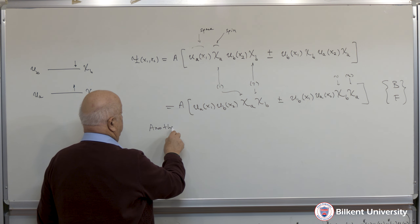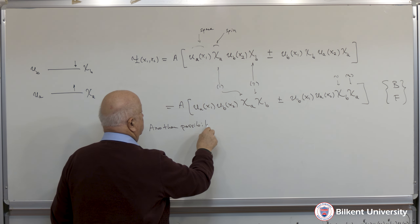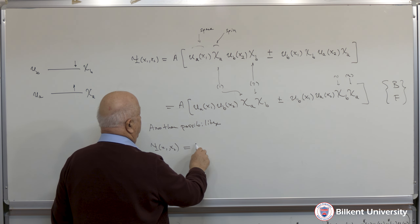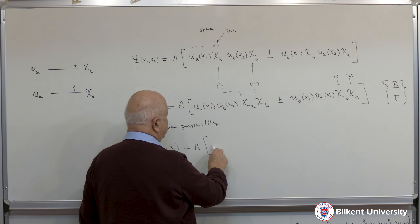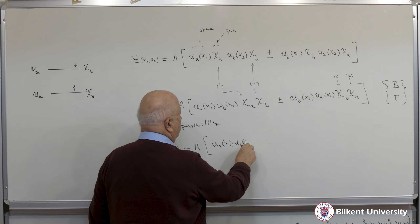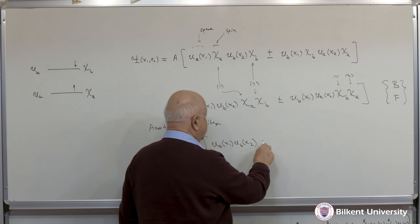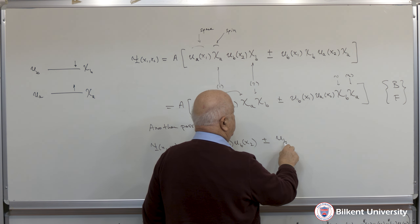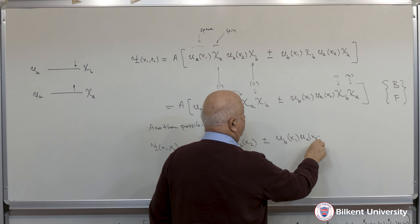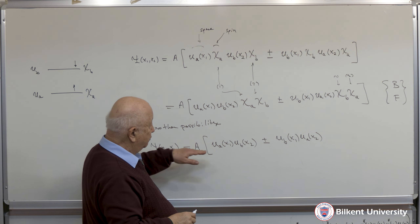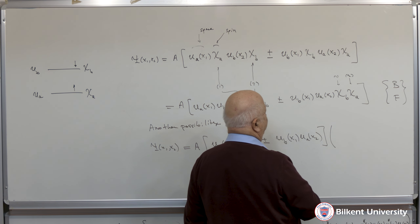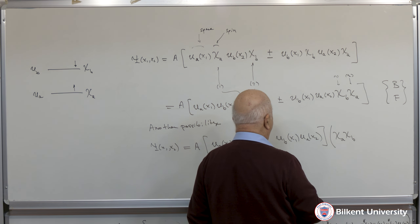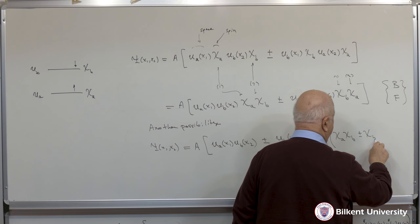Another possibility is that I have psi of x1, x2 and the spin states in the form of A times the space part uA of x1, uB of x2, plus or minus uB of x1, uA of x2 — that is the space part of the wave function — and then the spin part factored out: spin of the first particle, spin of the second particle, plus or minus chi B, chi A.